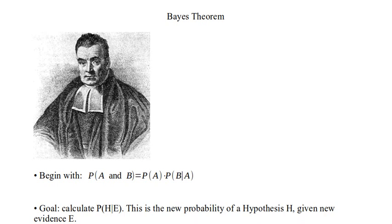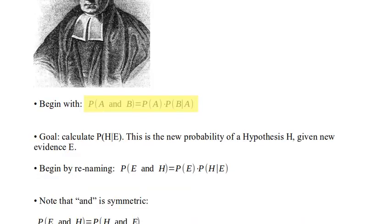We're going to begin with the result we had — the definition for the multiplication rule for 'and.' The probability of A and B is the probability of A times the probability of B given A. We're going to translate this into H's and E's. So our hypothesis is H and our evidence is E. Our goal is to calculate the probability that our hypothesis is correct given the evidence — does the evidence support the hypothesis?